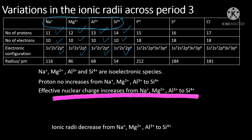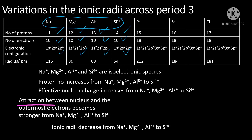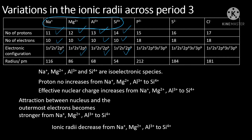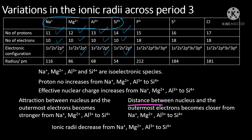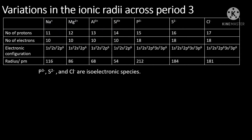Therefore, the effective nuclear charge also increases from sodium ion, magnesium ion, aluminum ion to silicon ion. As the effective nuclear charge increases, the attractions between the nucleus and the outermost electrons become stronger from sodium ion, magnesium ion, aluminum ion to silicon ion. Therefore, the ionic radii decrease from sodium ion, magnesium ion, aluminum ion to silicon ion.